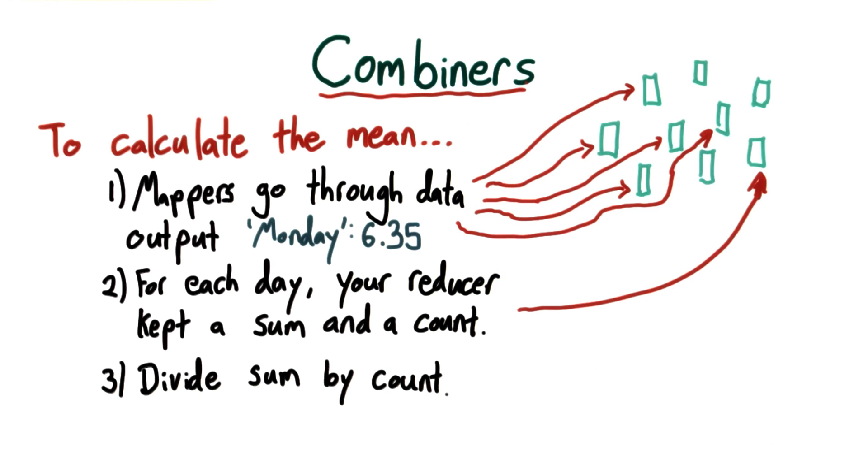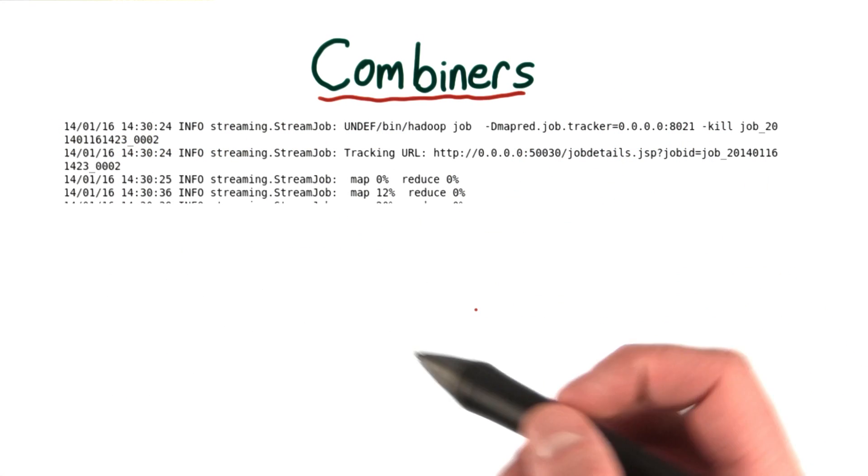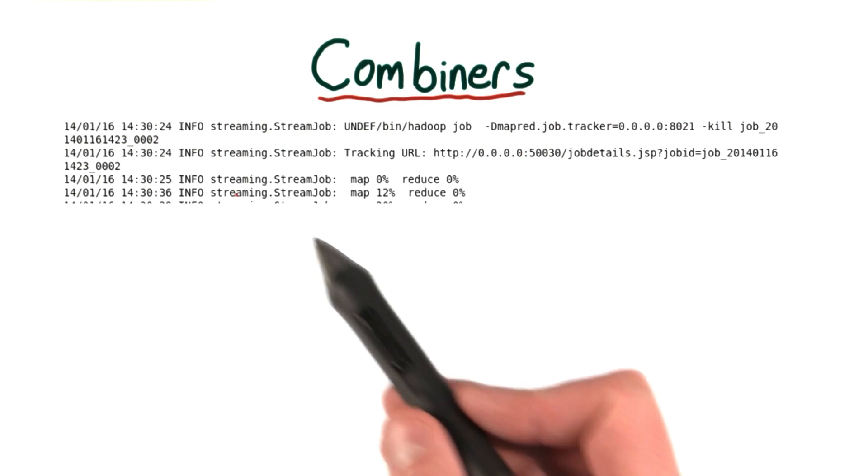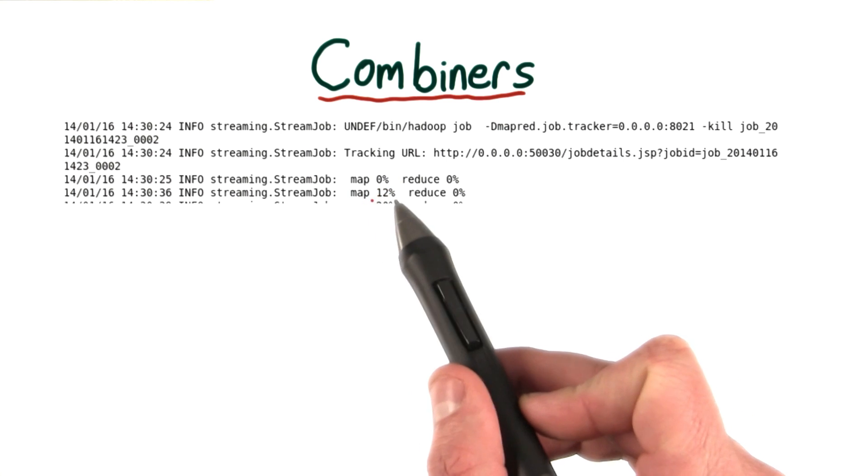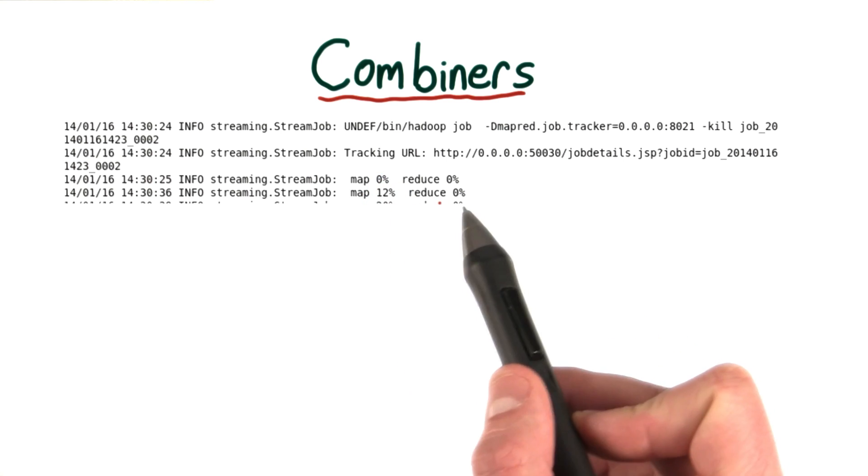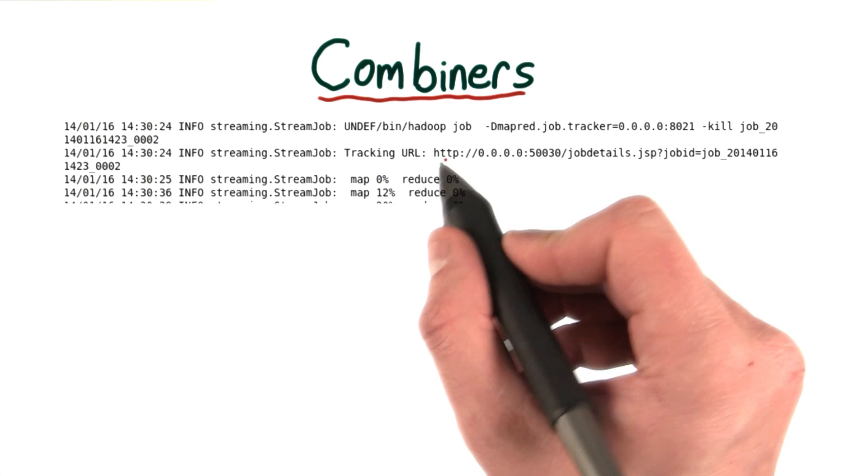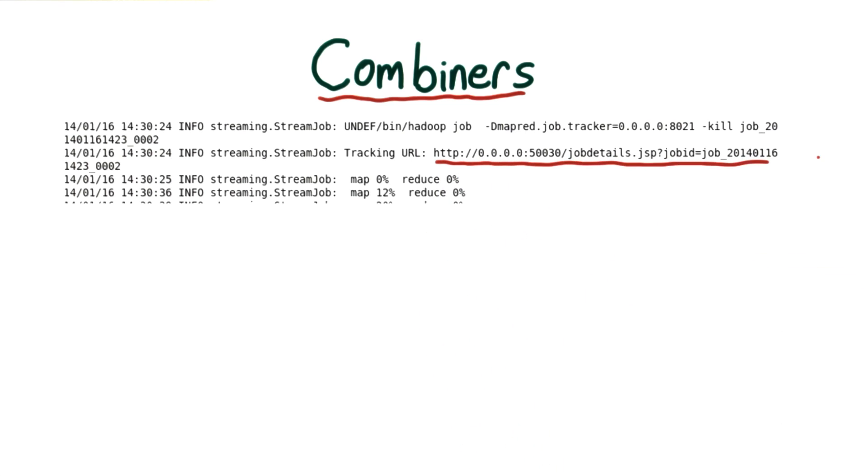And before you practice using combiners, let me try and sell you a bit more on their value. So as you know, when you run a MapReduce job, you get some output like this. This is where it's displaying how much mapping has happened and how much reducing. But you get this tracking URL. And if you open that URL in a browser, you get a job page.